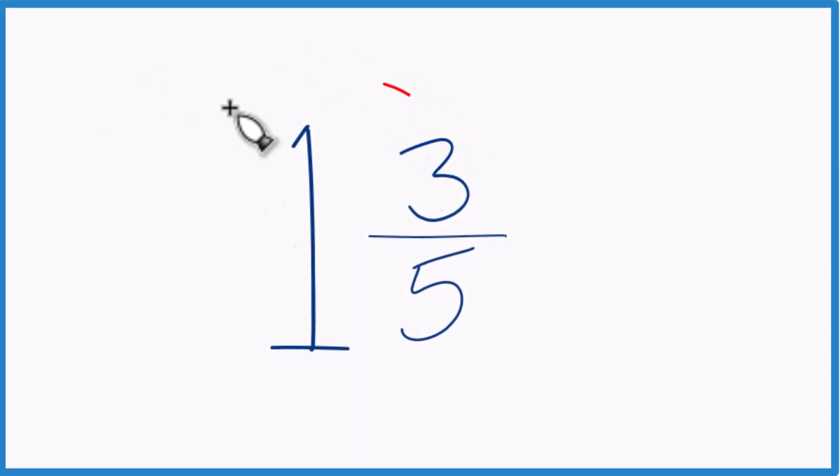Let's write the mixed number 1 and 3 fifths as an improper fraction where the numerator is greater than the denominator. Here's how you do it.